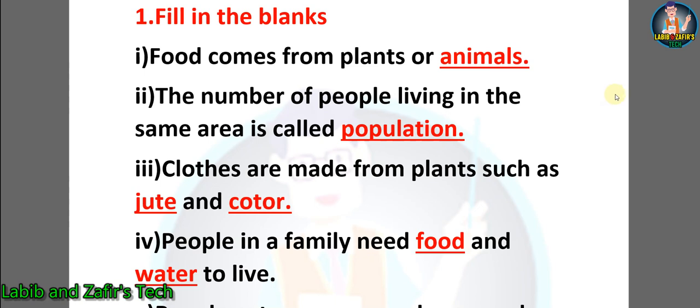At first we have some fill in the blanks. Number one: food comes from plants or animals. Number two: the number of people living in the same area is called population. Number three: clothes are made from plants such as jute and cotton.